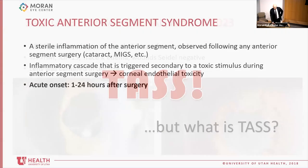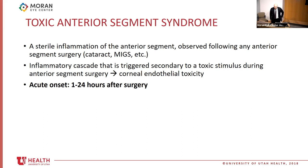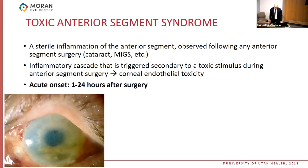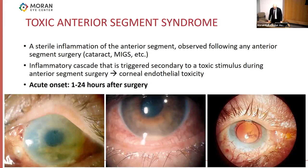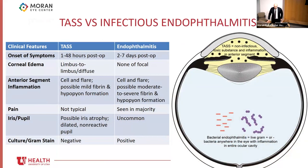TASS is Toxic Anterior Segment Syndrome — a sterile inflammation of the anterior segment secondary to any kind of anterior segment surgery. It's an inflammatory cascade triggered by a toxic stimulus that can cause corneal endothelial toxicity. A hallmark of TASS is its acute onset: it can happen right after surgery or the next day. Clinical presentation includes corneal edema, sometimes hypopyon formation, or even iris atrophy. The key is to rule out infectious endophthalmitis with a negative culture, since TASS is sterile.